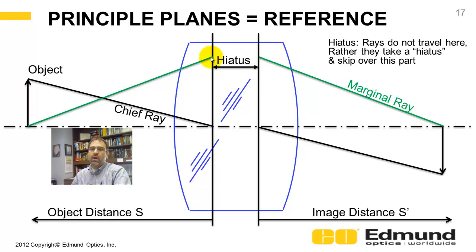The region between principal planes, referred to as hiatus, or what happens is the ray takes a hiatus, doesn't travel between these two, comes to this point here.